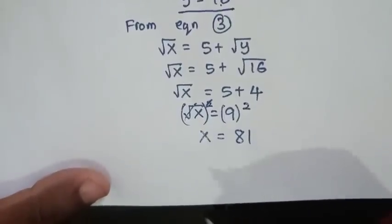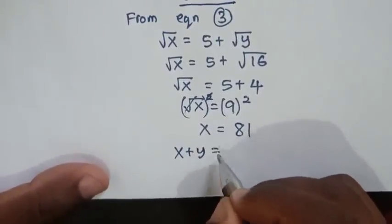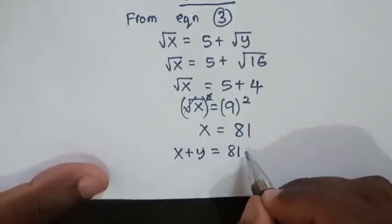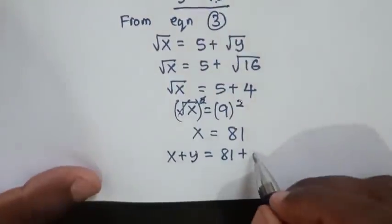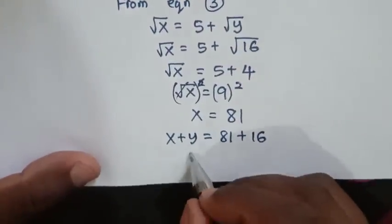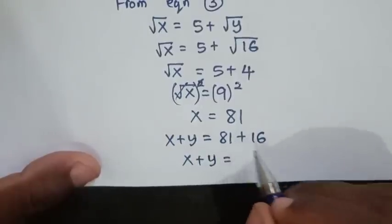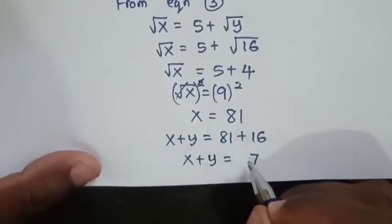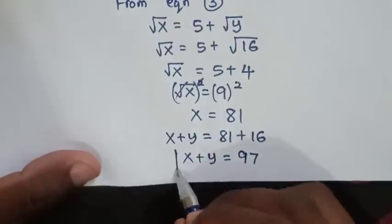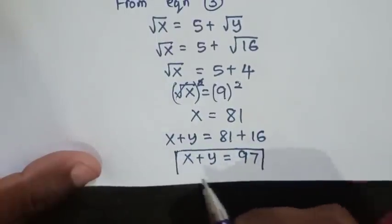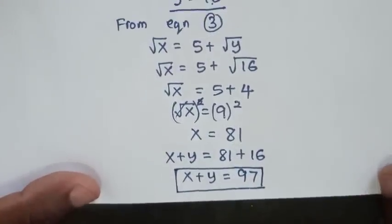Now to find the value of x plus y: x plus y equals 81 plus 16, which equals 97. So the value of x plus y is 97. This is the final answer.